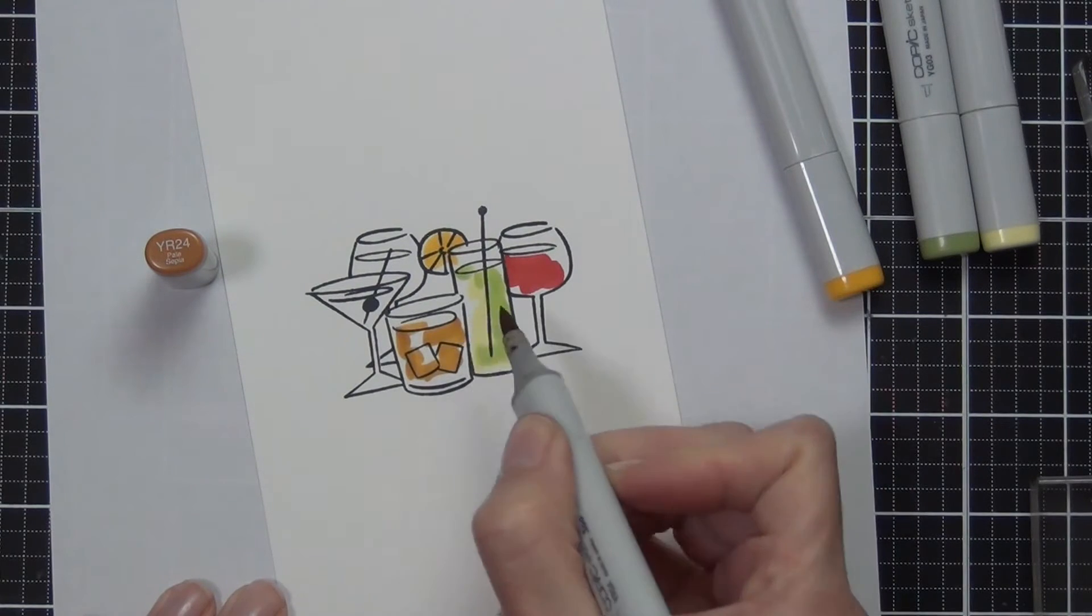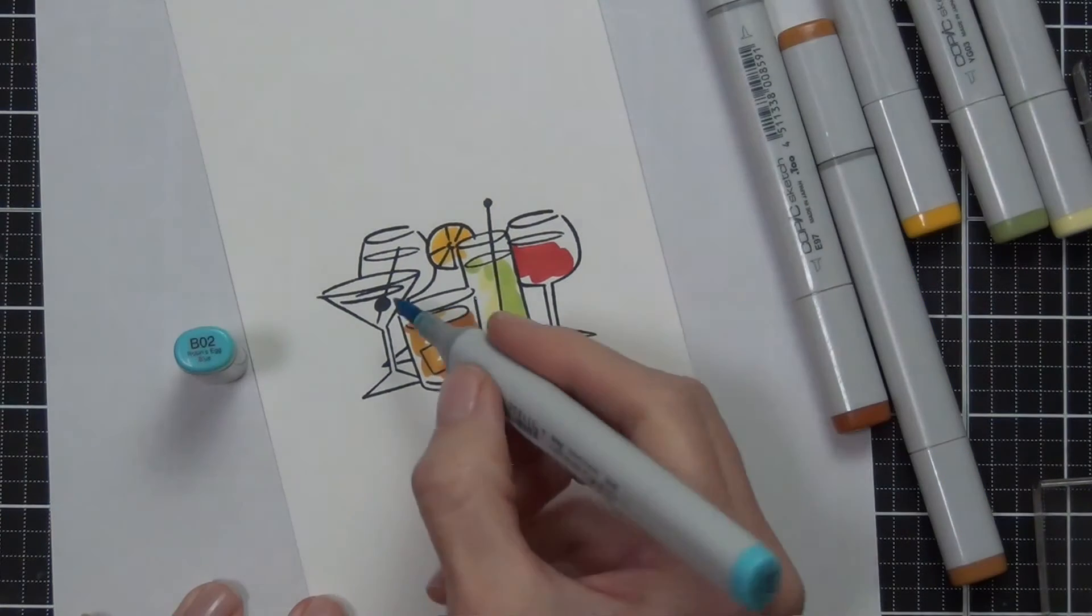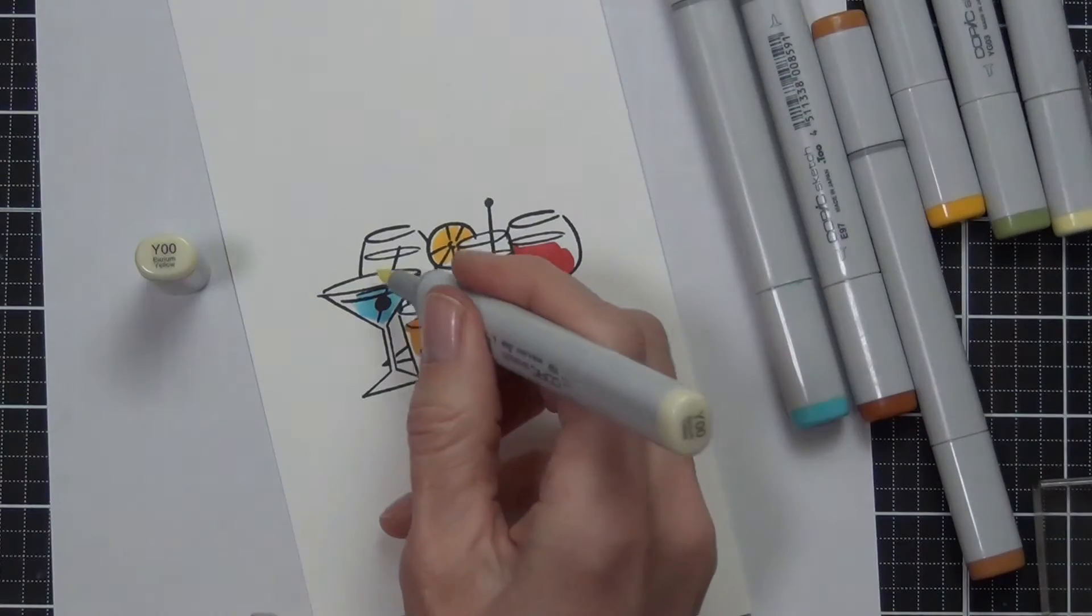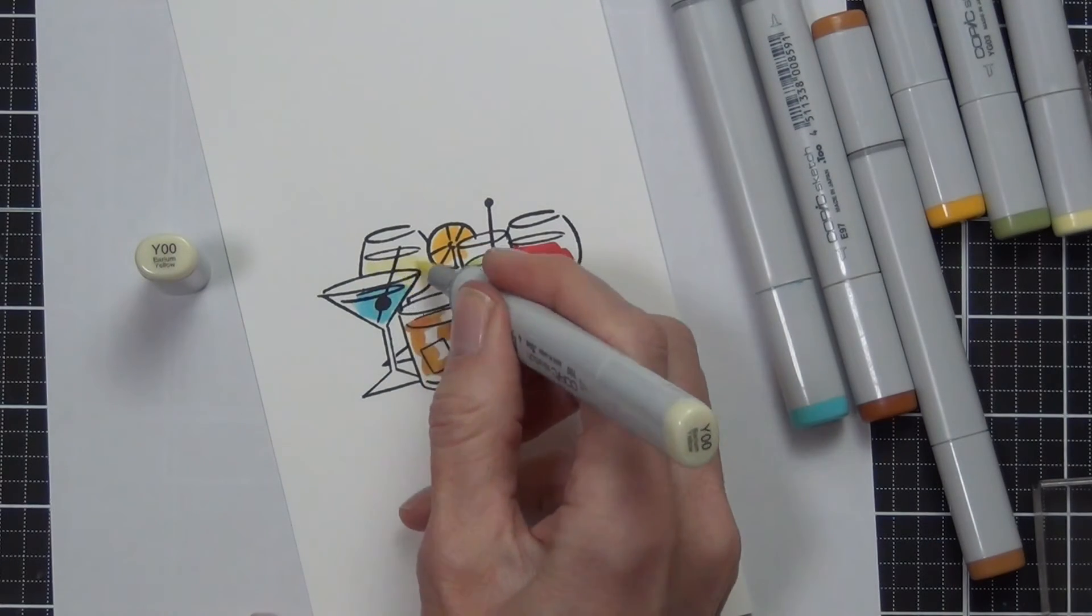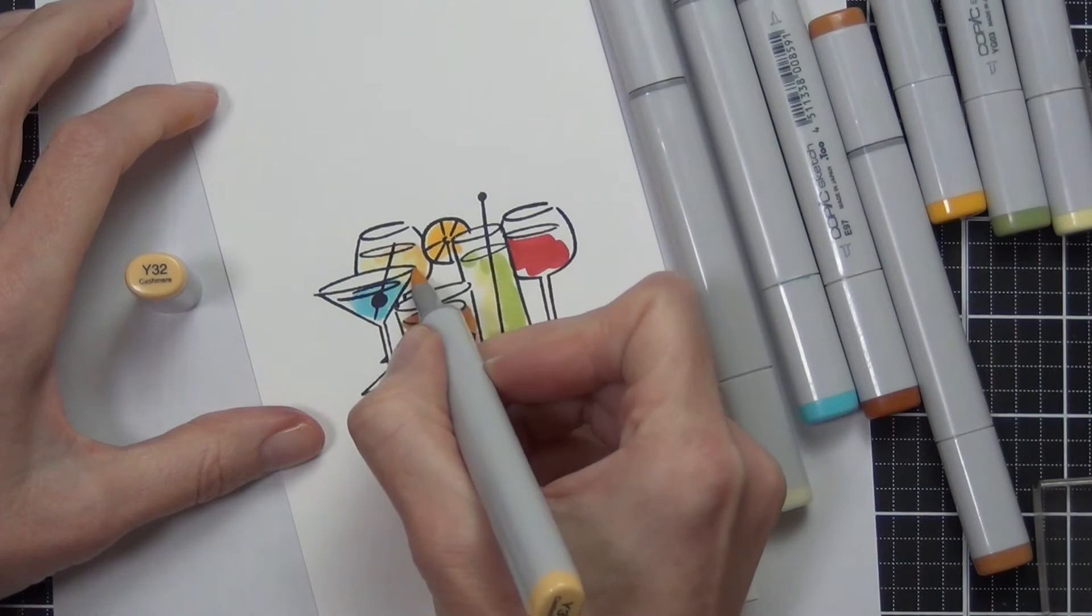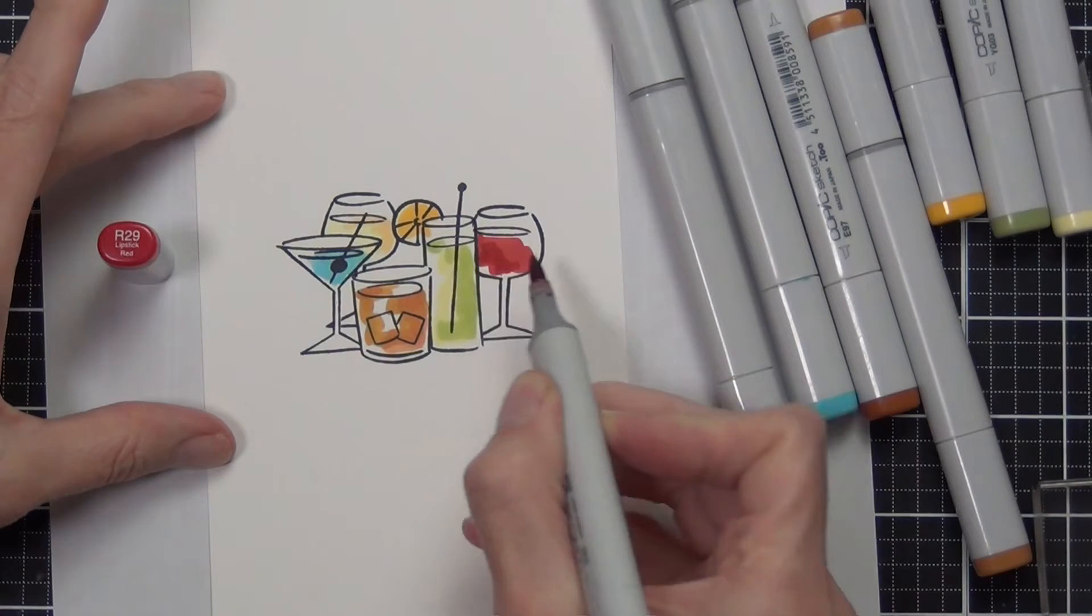On most of the glasses I came in with a second or third color and added a bit of depth but made that look a bit messy as well. It's a really easy and fun way to add color to your images, especially a sketchy image like these glasses.